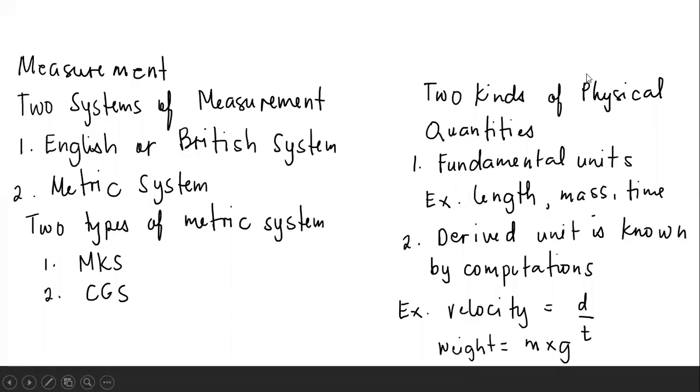For uncertainty and significant figures: as measurements are performed, they yield some form of uncertainties in the form of error. The smaller the uncertainty or error, the more accurate the measurement. The uncertainty is indicated by the number of meaningful digits in the measured values. We have guidelines for using significant figures.